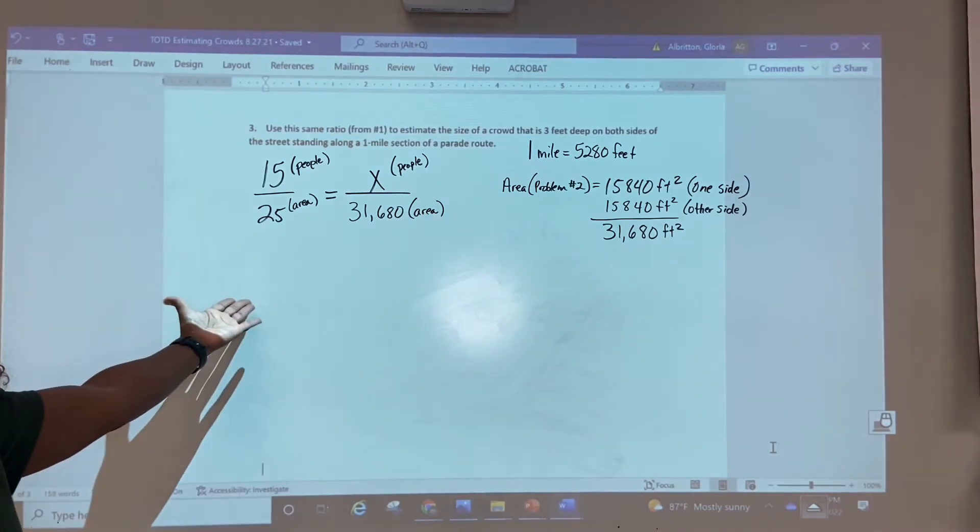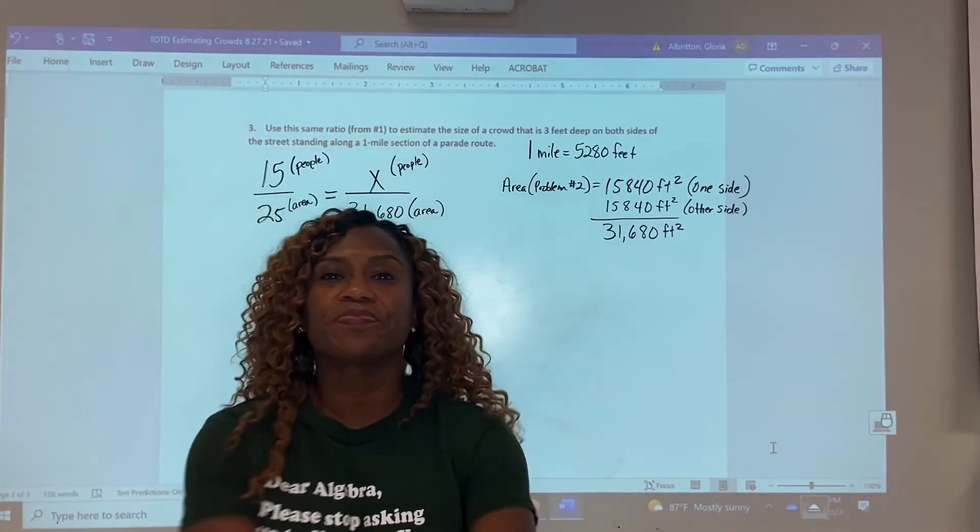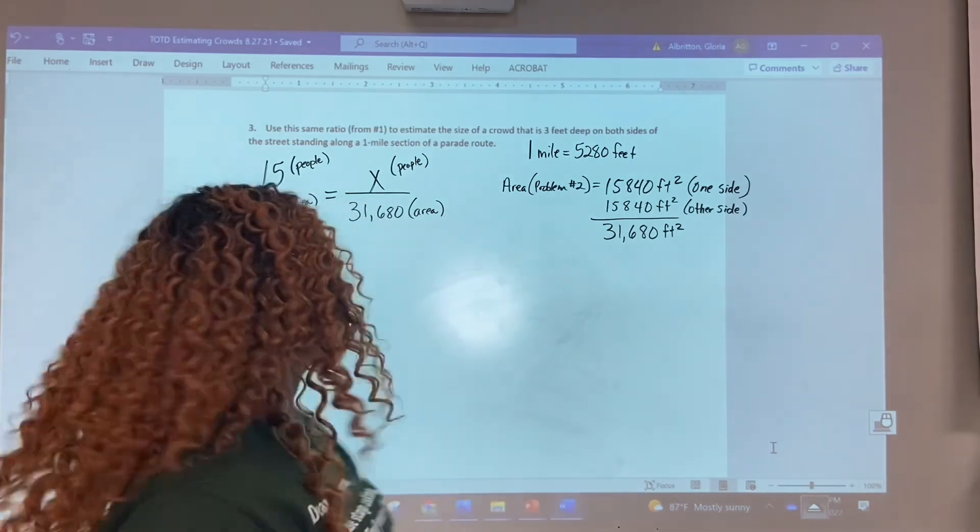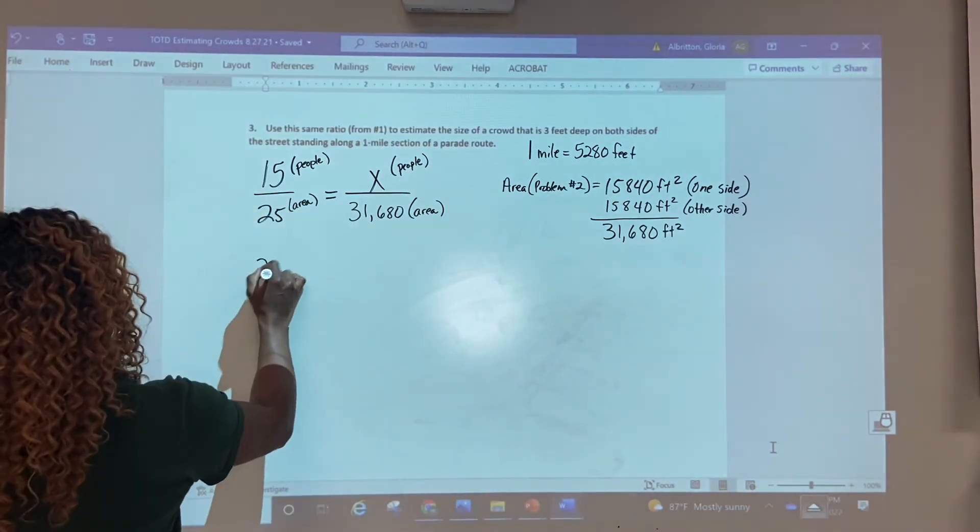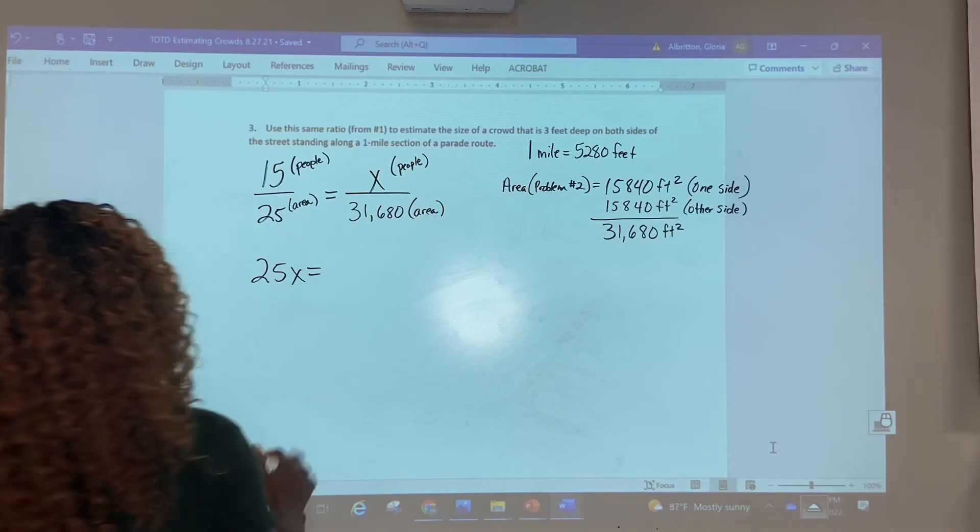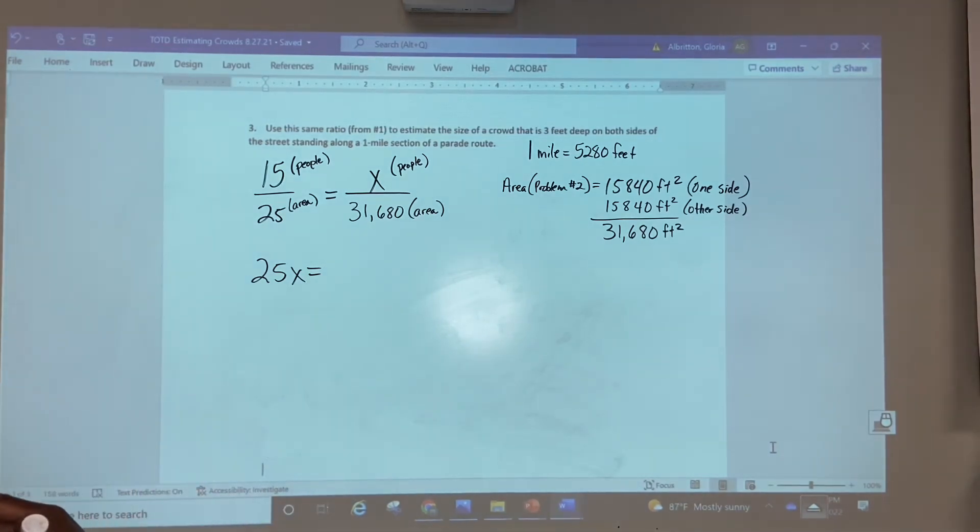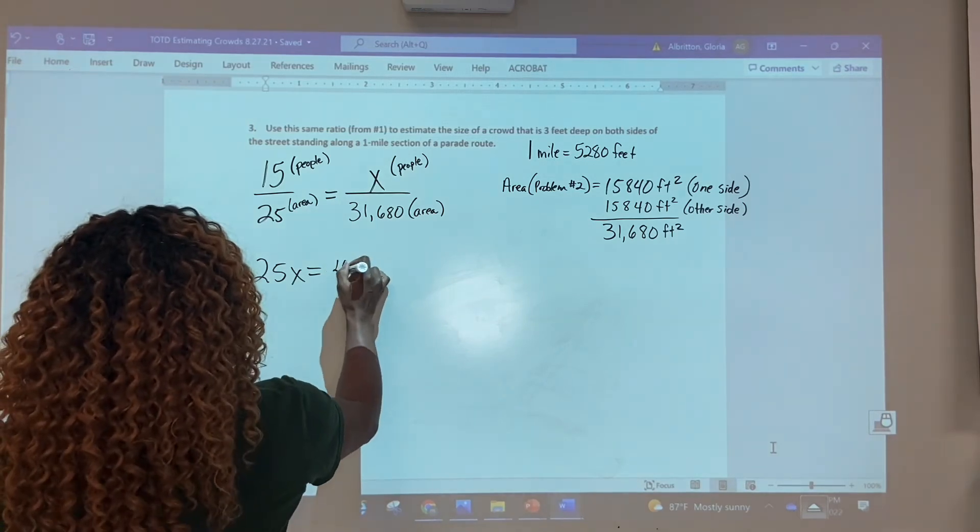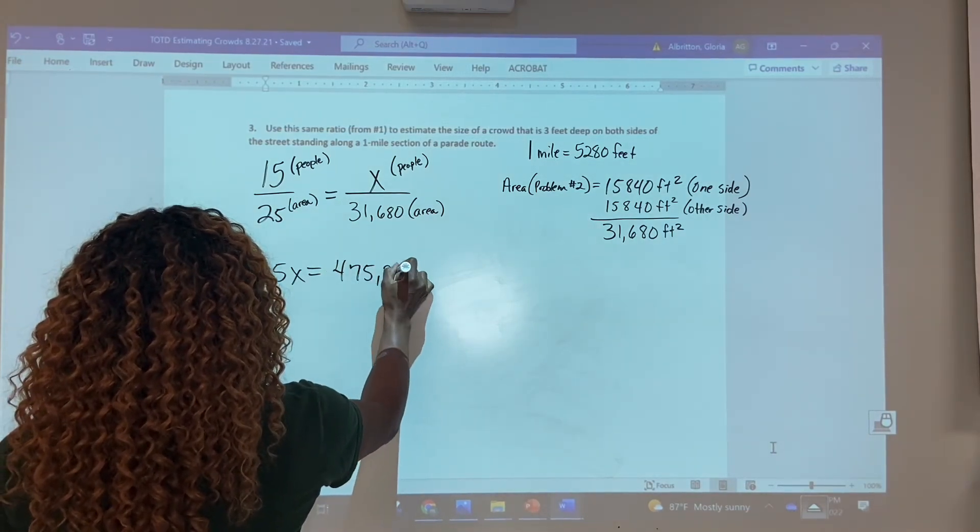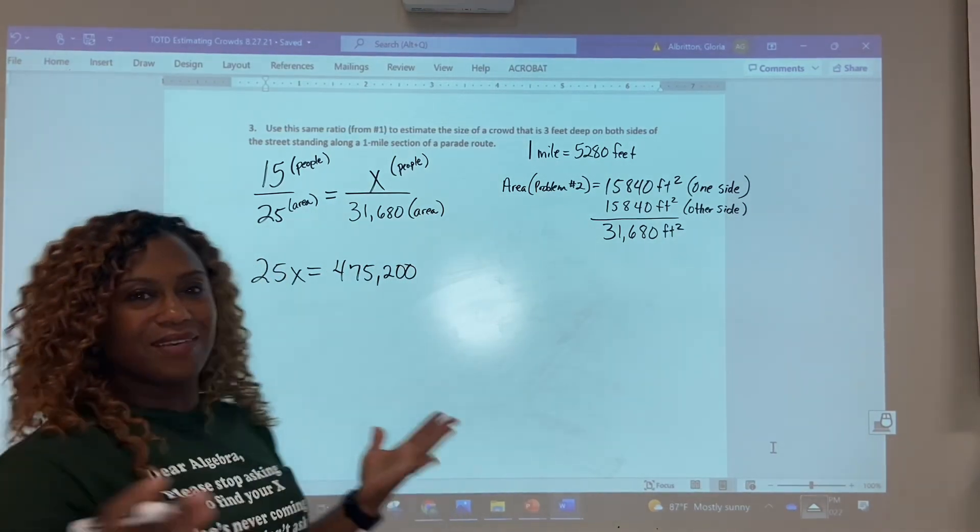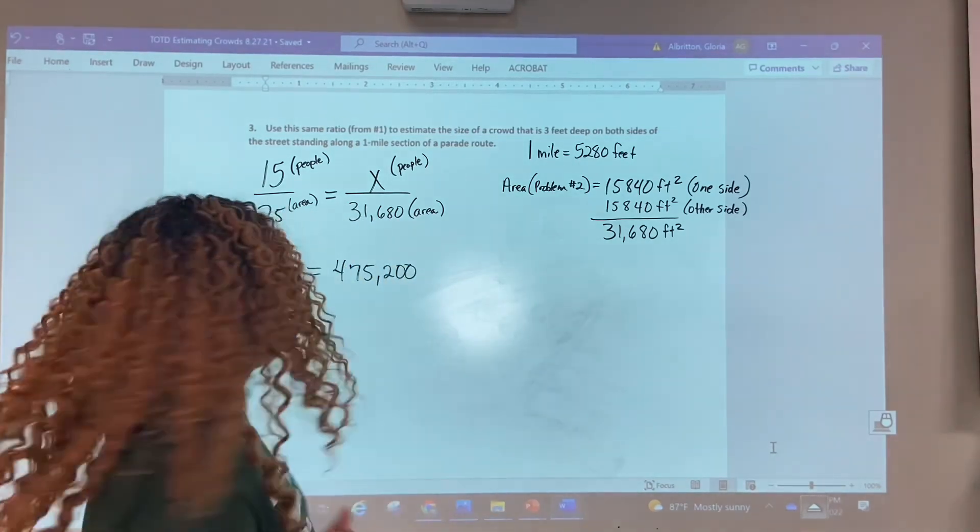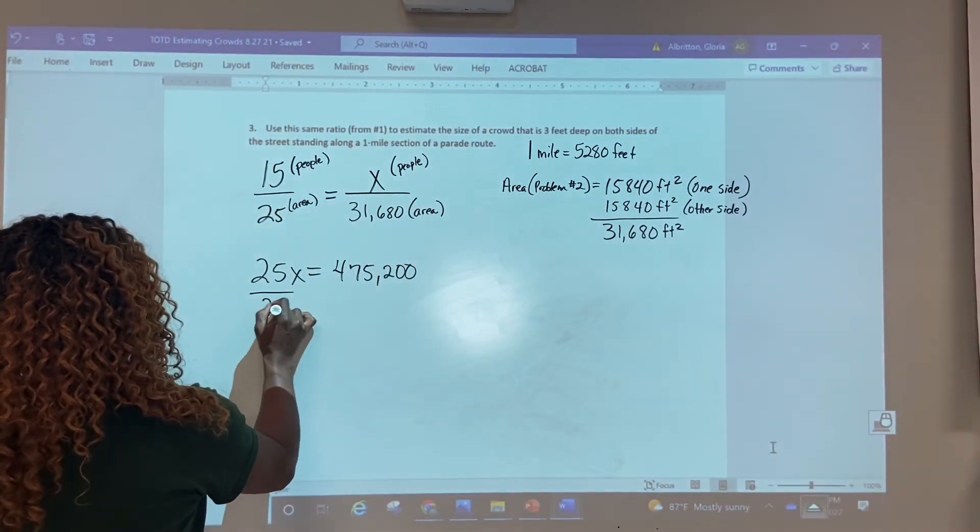There's our proportion. How do we solve a proportion? We cross multiply. So let's do it. We know we're going to have 25x and that's going to be equal to 15 times 31,680. Wow, what is that? That's 475,200. Yes, I calculated that earlier. Now we divide both sides by 25.